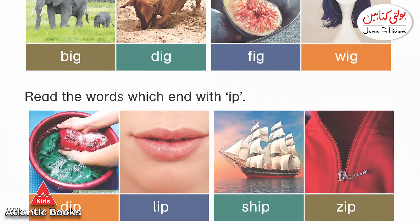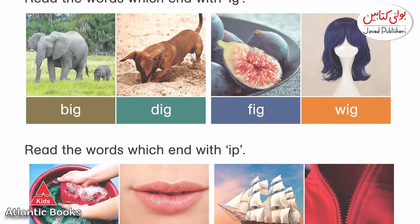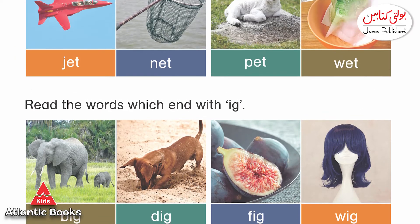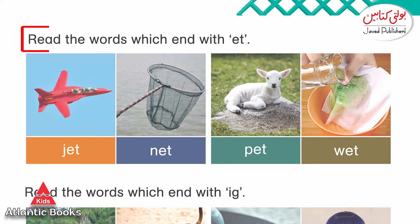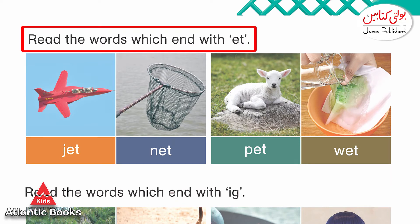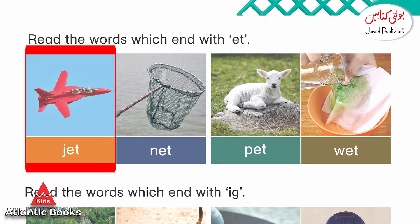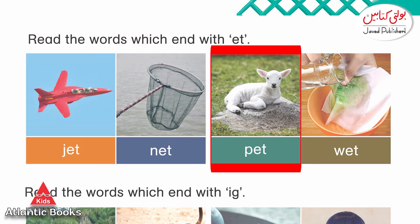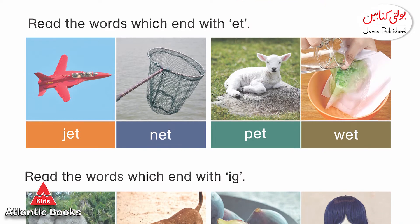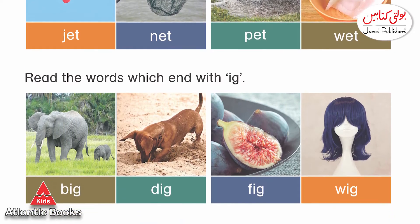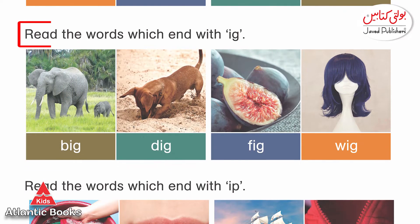We will move on to page 8. We will have the sound from E and T, which is 'et'. The words are: jet, net, pet, wet.